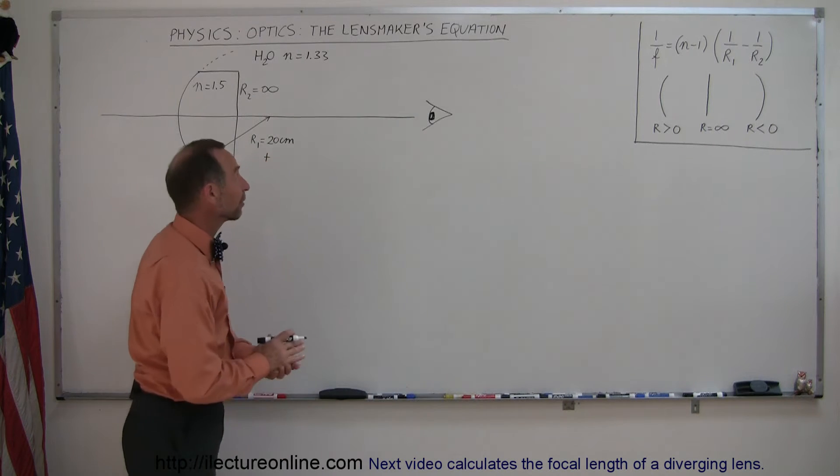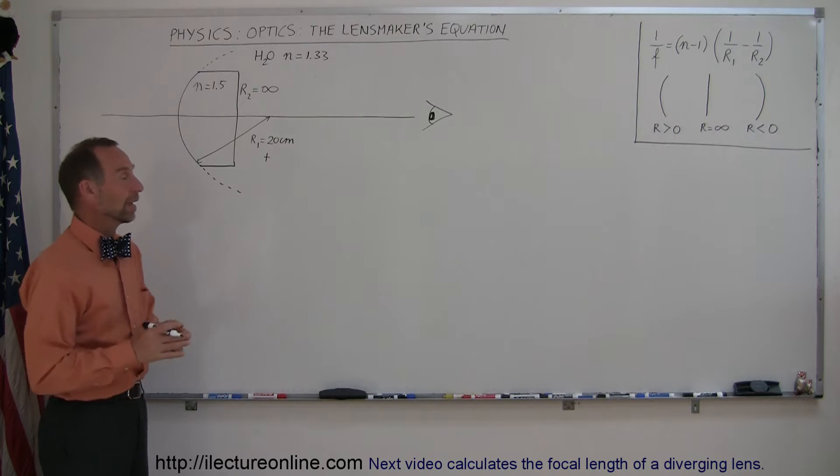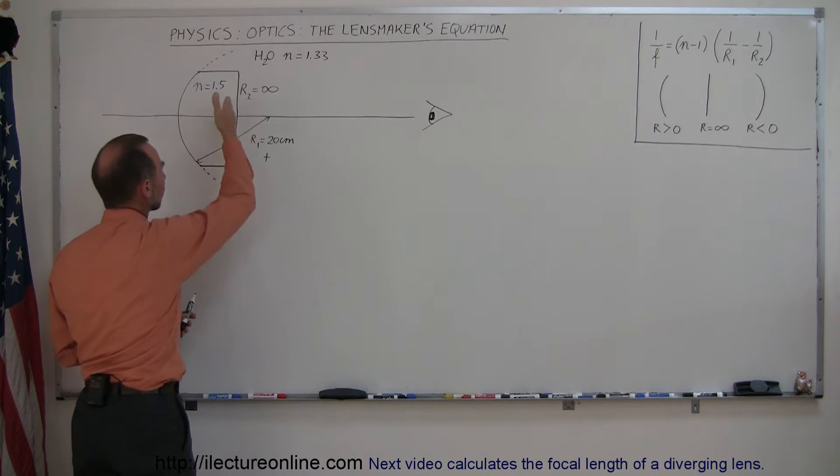Here's our third example of how to find the focal length of a lens. This one is different in two ways. The backside of the lens has a straight edge.